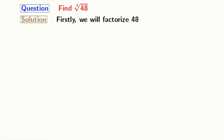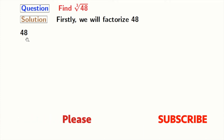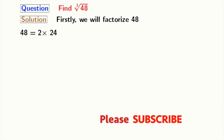We will factorize 48 at first. As 48 is an even number, 2 will divide it and we get 2 times 24 is equal to 48. Now we have to factorize 24, and we get this equal to 2 times 12.